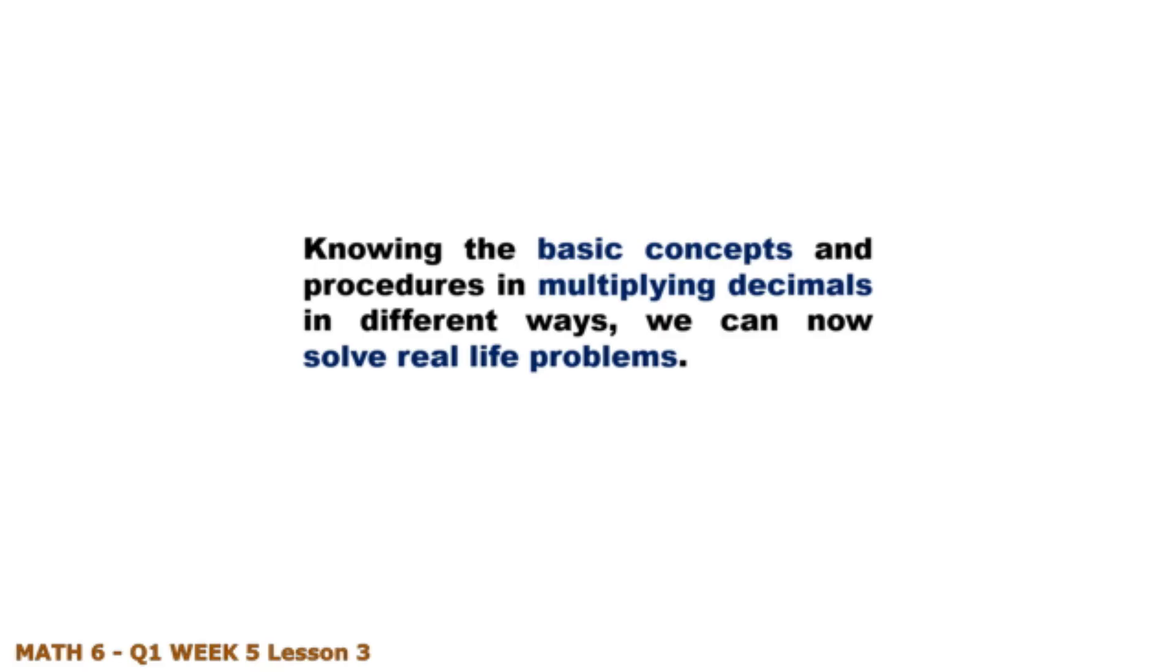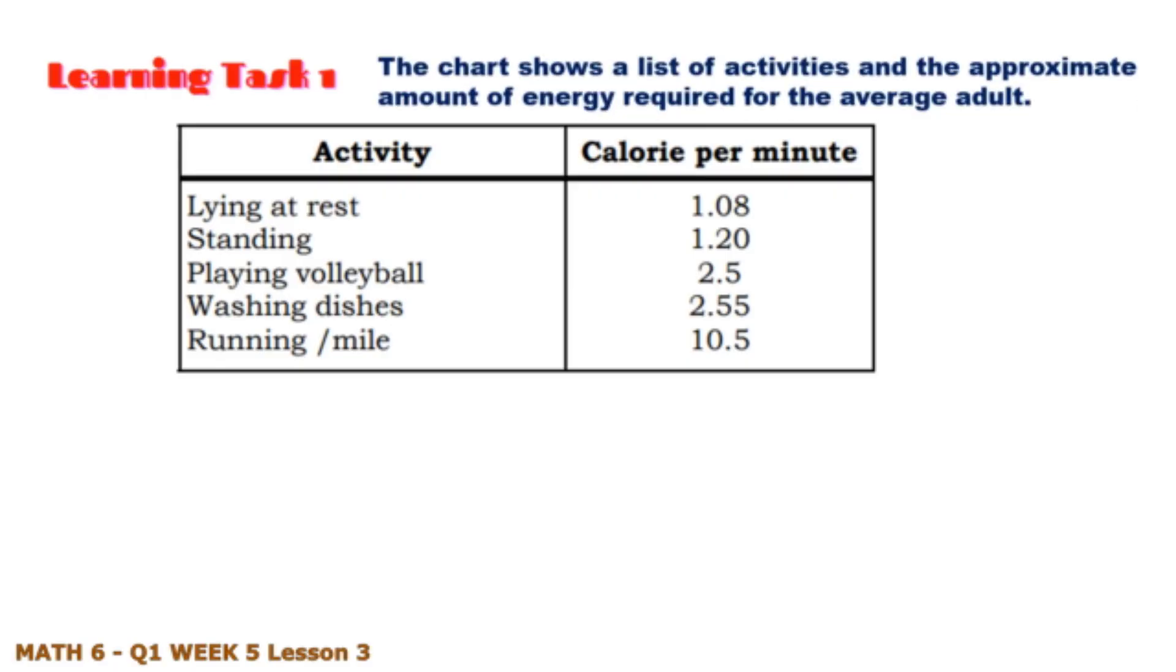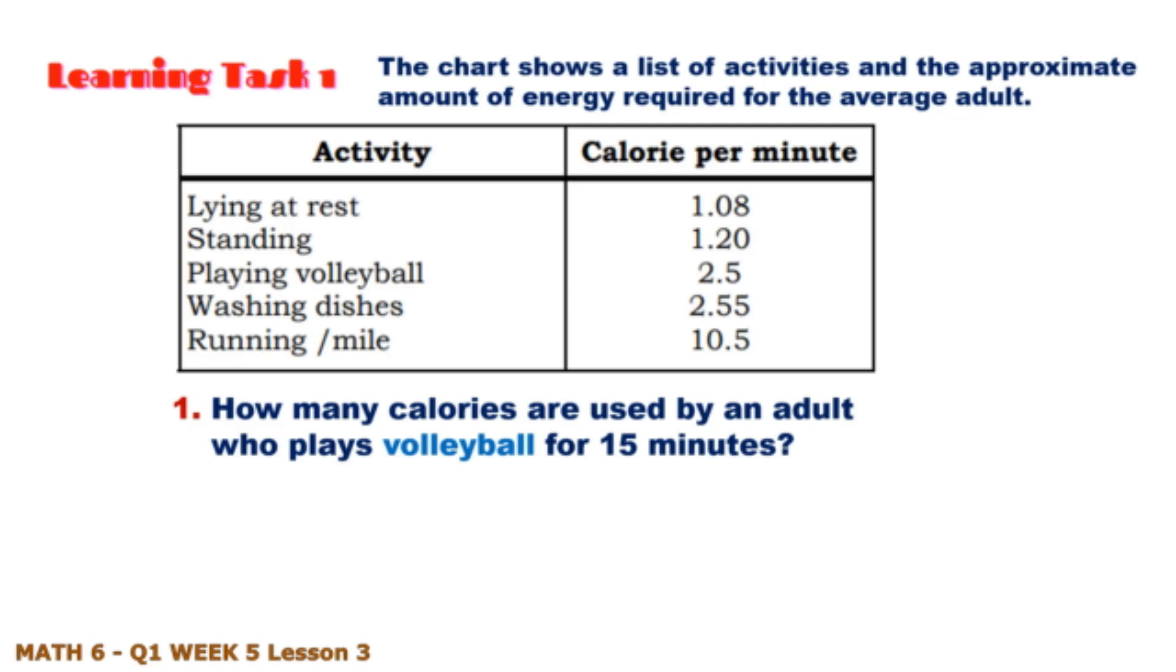Learning task one: The chart shows a list of activities and the approximate amount of energy required for the average adult. How many calories are used by an adult who plays volleyball for 15 minutes? This is 2.5 times 15 equals 37.5 calories.